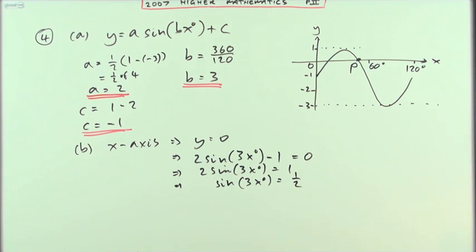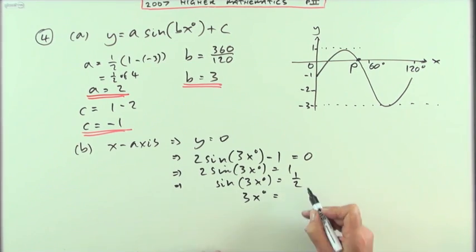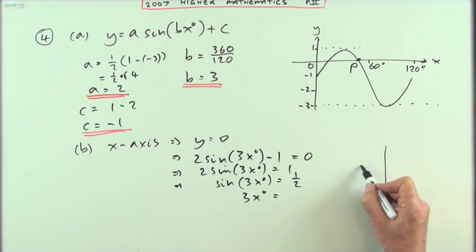The third time this has happened now in paper 2, this could have been a paper 1 question again. A half, so I know the answers for 3x. So 3x can be, the sin of 30 is a half, remember it happens twice, the sin of 30 is a half.